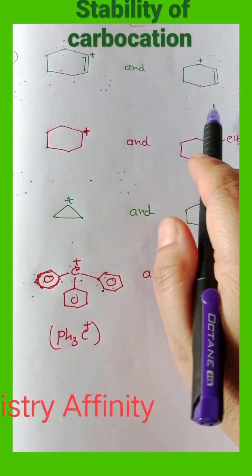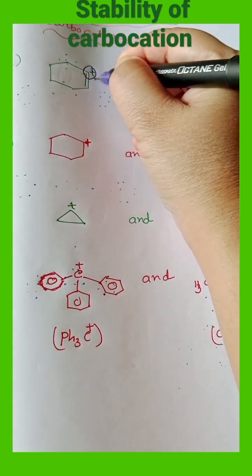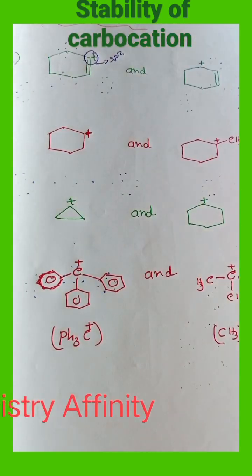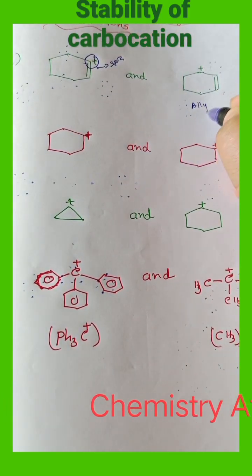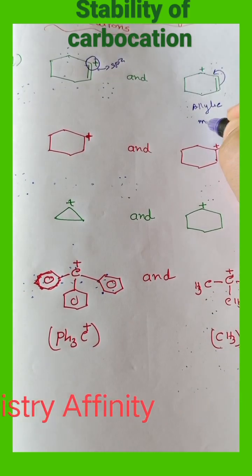Compare the stability of carbocation. In this carbocation, this carbon is sp2 hybridized and here this is an allylic carbocation which can undergo resonance. So this is more stable.